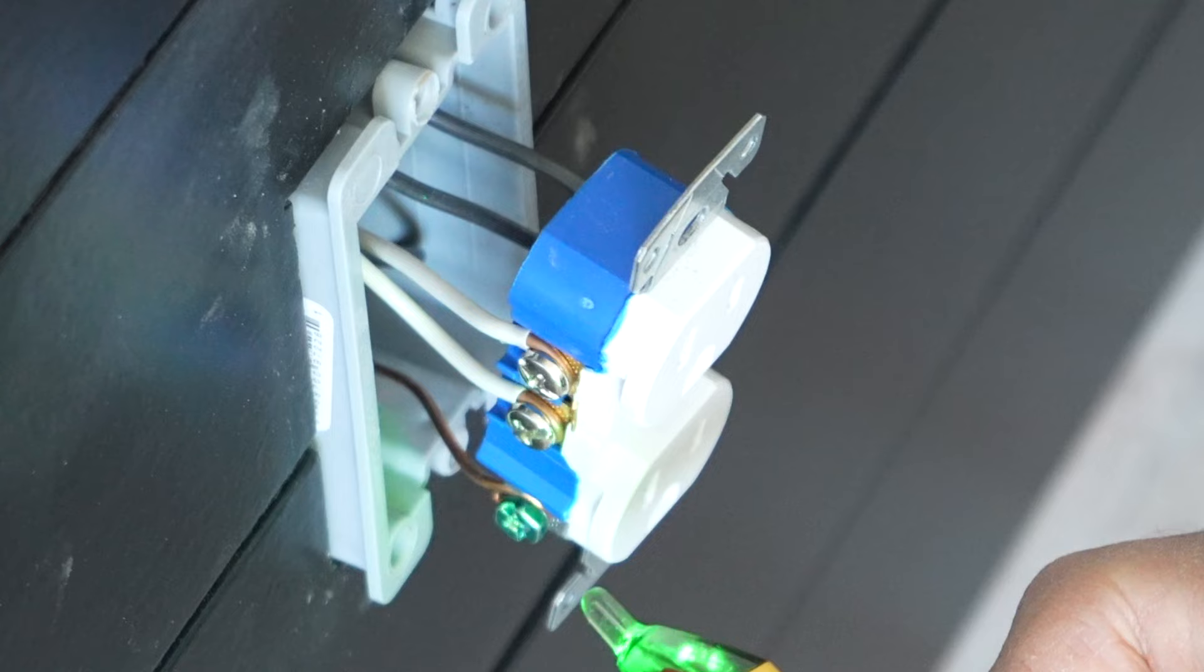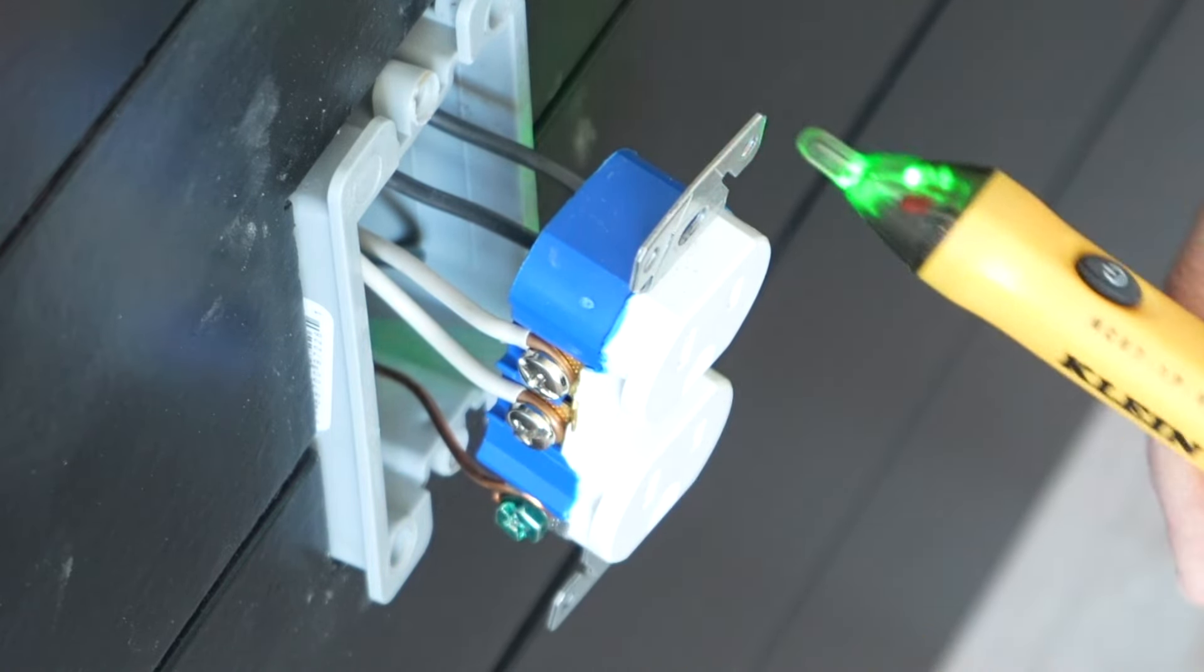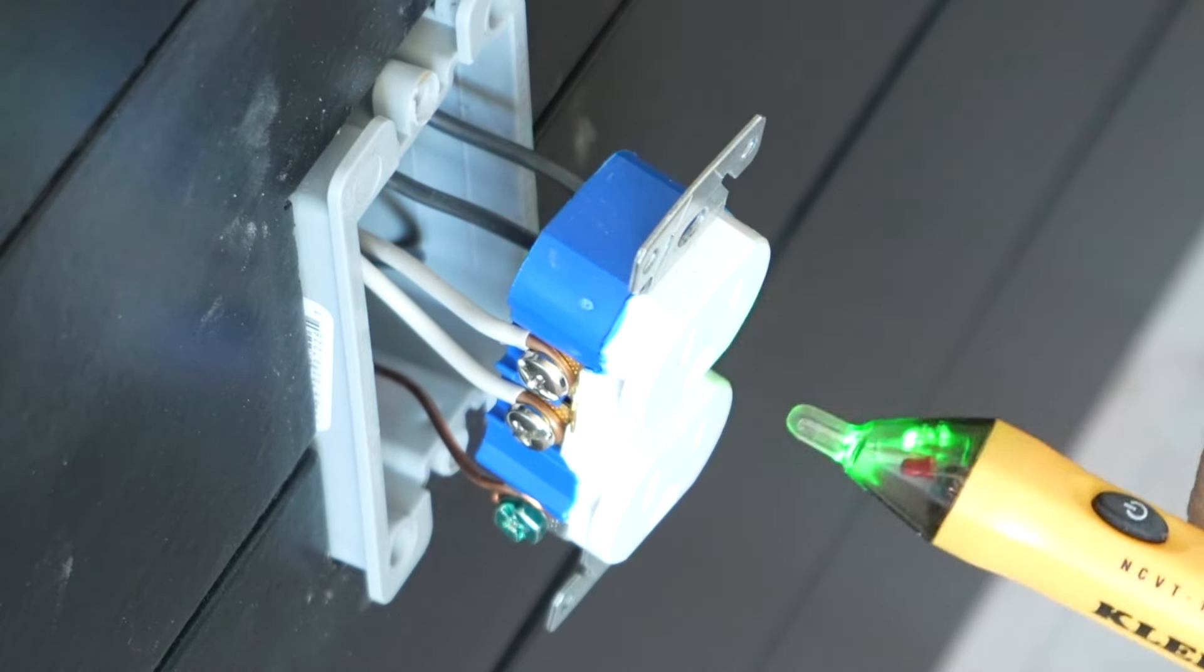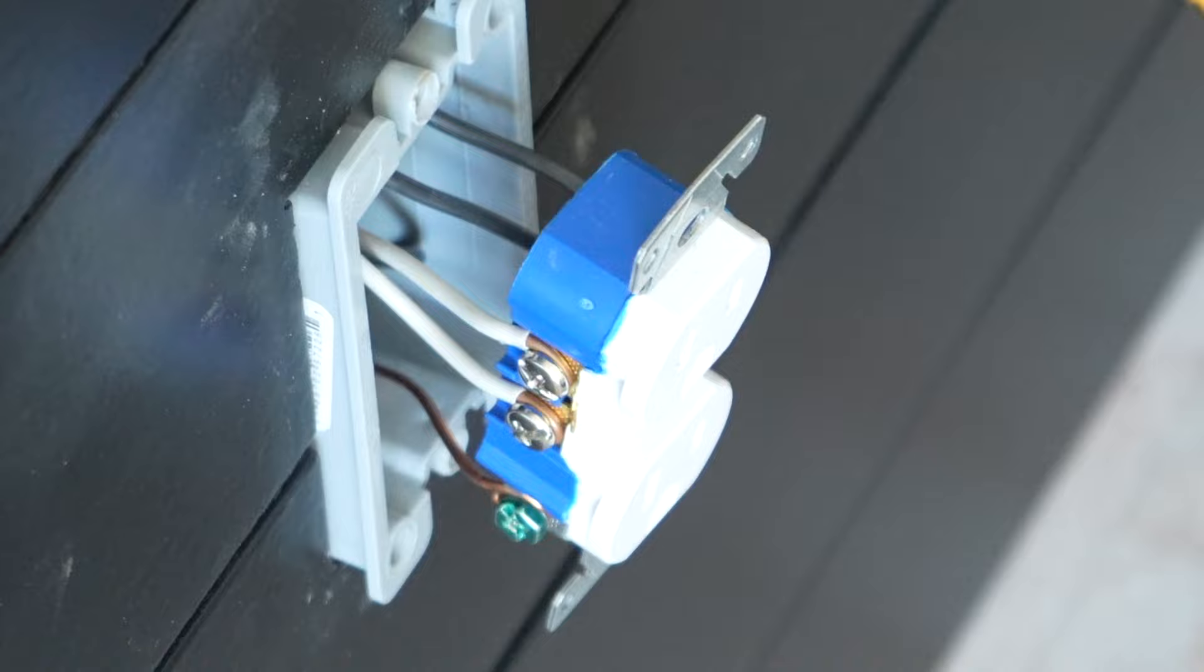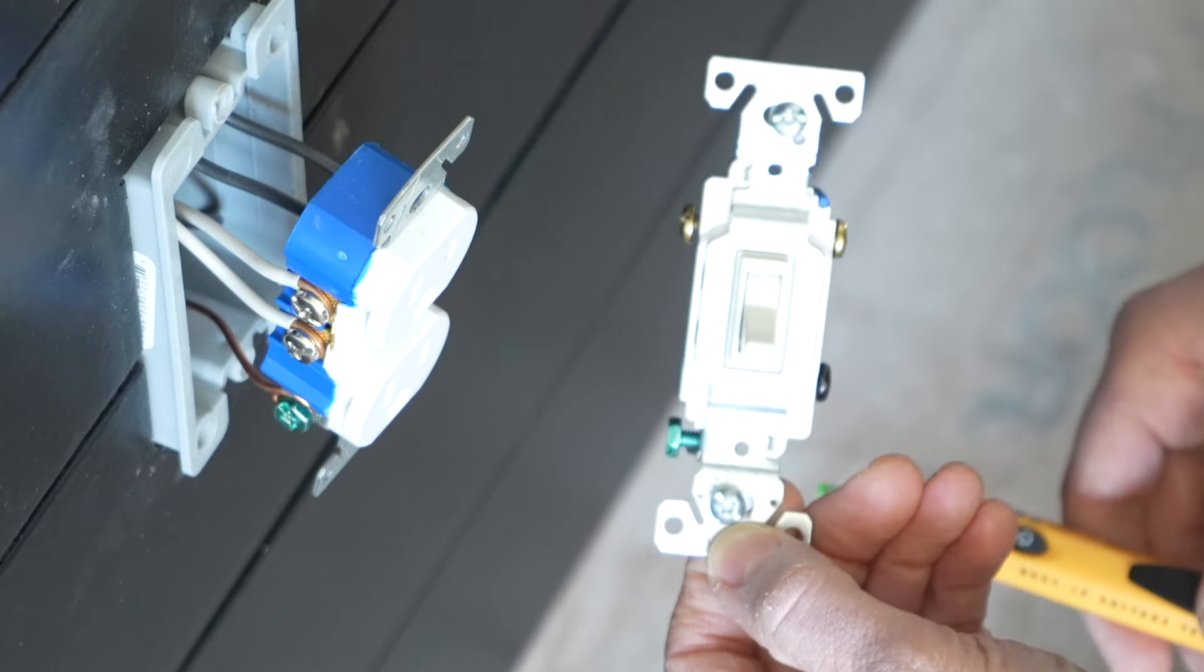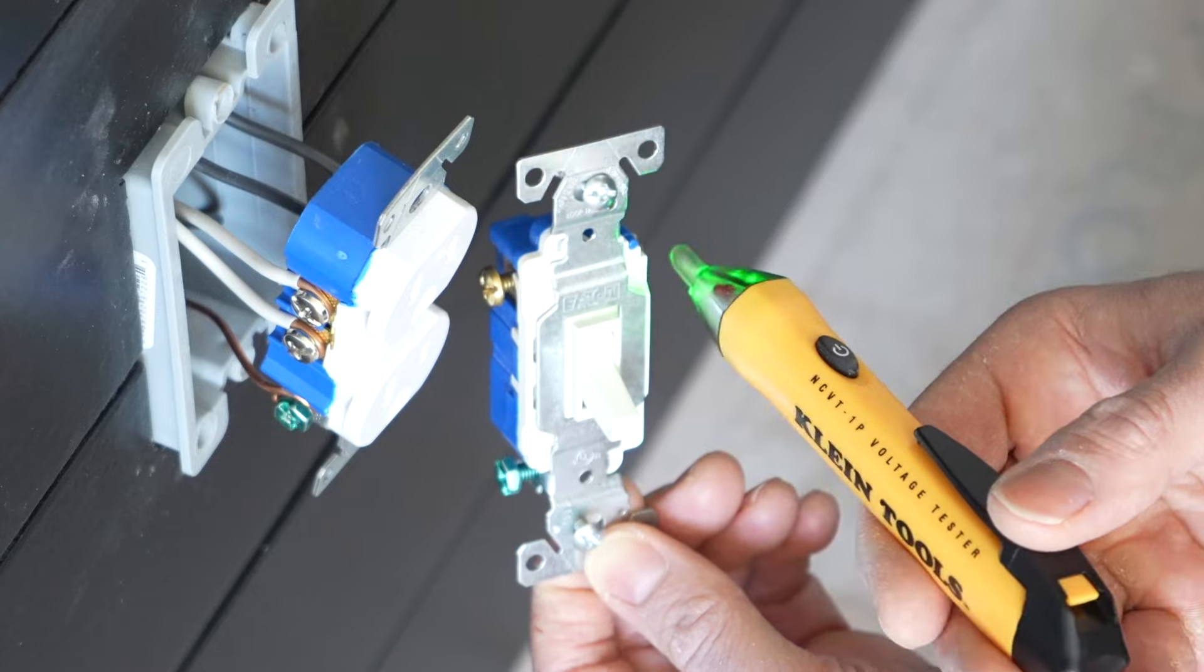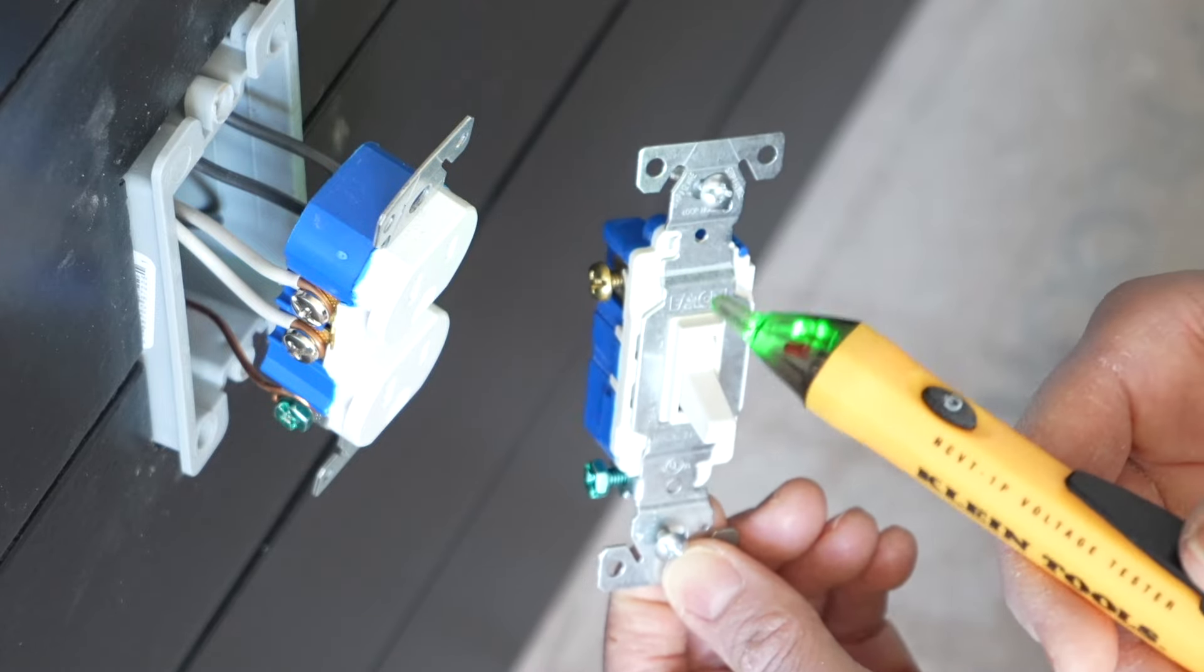I pulled this receptacle out of the wall so you can see this demonstrated on a receptacle. If you touch these silver terminals, there's no beeping. But if we touch the gold terminals where the black wires are located, it clearly has power. Now if you're wondering how do you test the switch, it's the same idea. You just touch the terminals with the tester and it will beep if there's power to it.